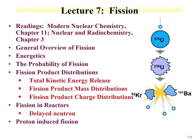The lecture covers a general overview of fission and the energetics related to fission — energy from fission is much greater than other decay processes. We'll discuss the probability of fission, including cross-sections. Certain isotopes have a high cross-section for fission from absorption of a thermal neutron. We'll cover fission product distributions including total kinetic energy release, mass distribution, and charge distribution. We'll talk about fission in nuclear reactors, delayed neutron emission which can induce fission, and introduce delayed neutron isotopes from the fission process.